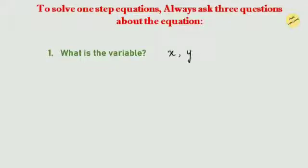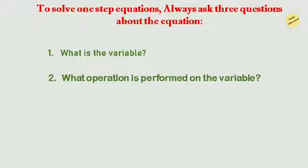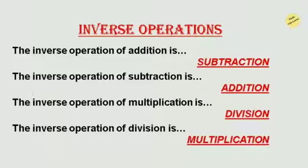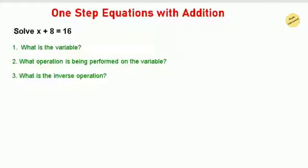An equation always contains a variable, constant, operators, and an equal sign. To solve any one-step equation, always ask three questions. First: what is the variable? A variable is any alphabet whose value needs to be found. Second: what operation is performed on the variable — is it addition, subtraction, multiplication, or division? Third: what is the inverse operation? If addition is given, the inverse is subtraction; if subtraction, the inverse is addition; if multiplication, the inverse is division; and if division, the inverse is multiplication.